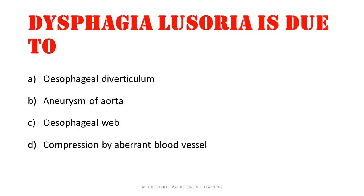Dysphagia lusoria is due to — we had discussed this in the esophagus video. The options are esophageal diverticulum, aneurysm of aorta, esophageal web, or compression by aberrant blood vessels. The answer is compression by aberrant blood vessels.